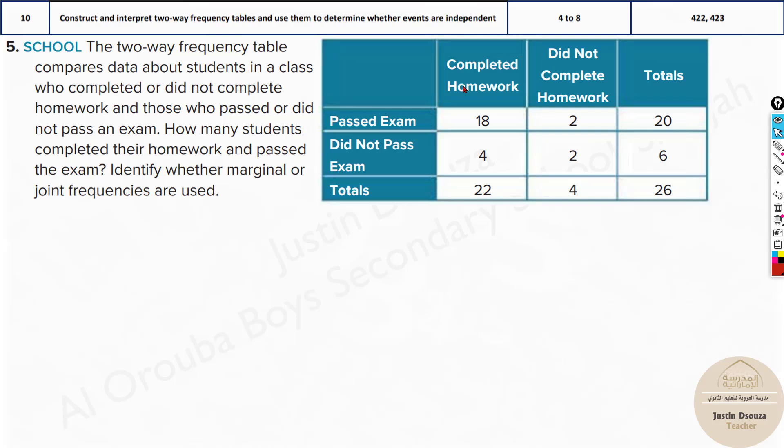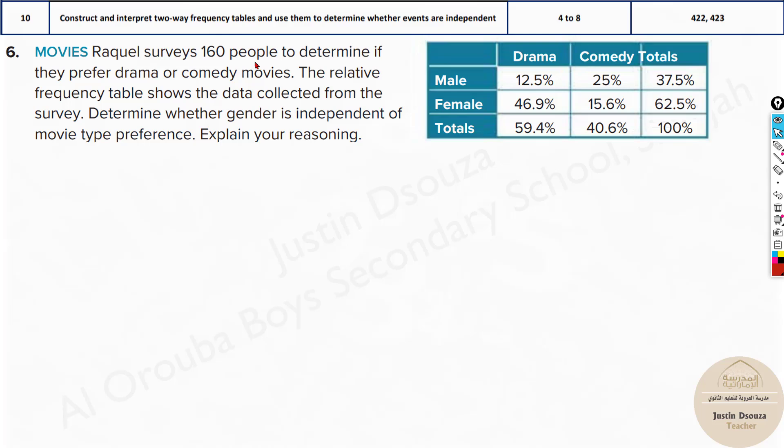What is the question? How many students completed their homework and passed the exam? Completed homework, passed the exam. It's 18 number of students. That's the answer. And which did we use? Joint frequency, the ones on the inside. The outside ones are marginal.